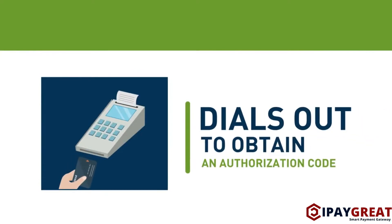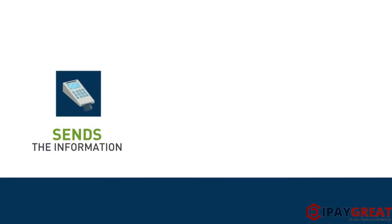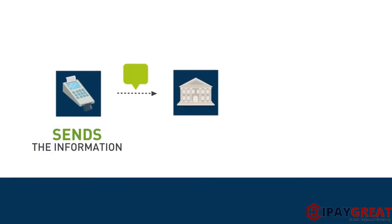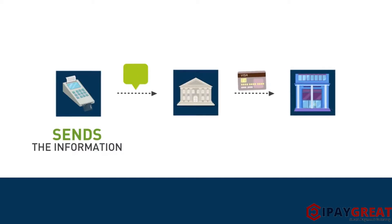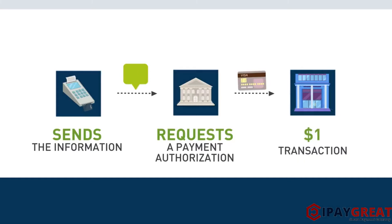Here's what happens next. First, the POS terminal sends the information to the acquirer. The acquirer sends the details to the issuing bank via the credit card network — let's say Visa — and requests a payment authorization for a $1 transaction from the issuing bank.